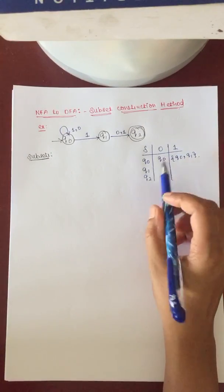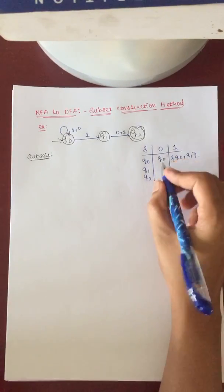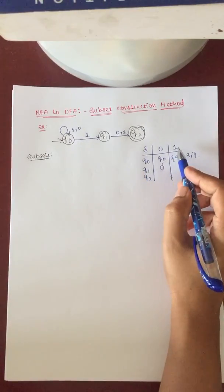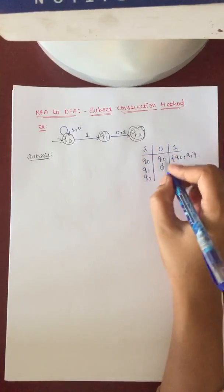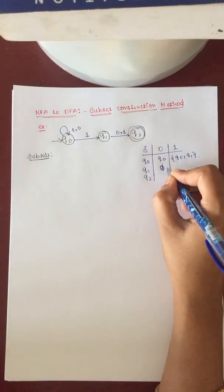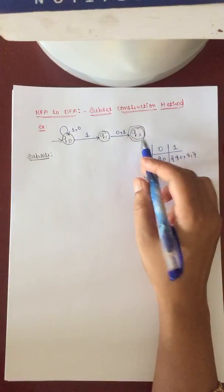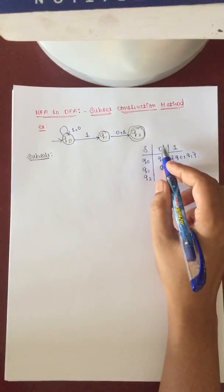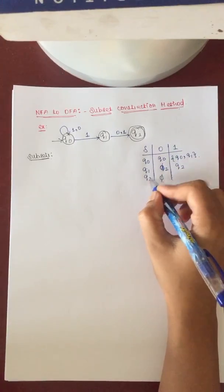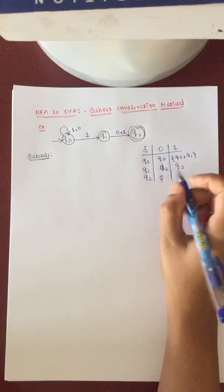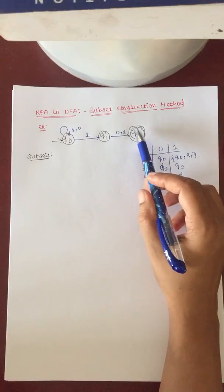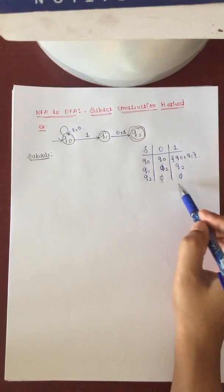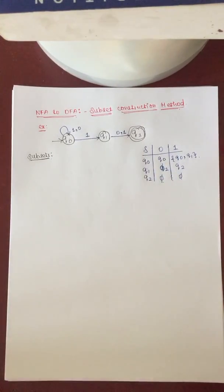Q1 with input symbol 0 is not going anywhere, so it is null. Q1 with input symbol 1 is going to state Q2. Q2 with input symbol 0 is not going anywhere, so it is null. Q2 with input symbol 1 is also null, because Q2 does not have a 0 transition or a 1 transition. So we are writing null here. We have made a transition table for this NFA diagram.